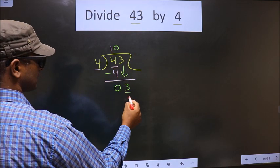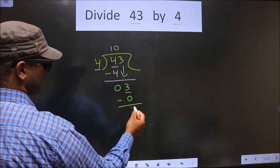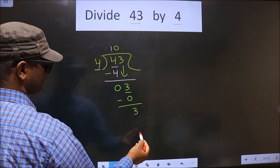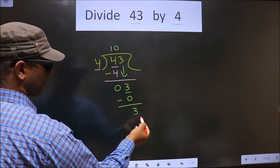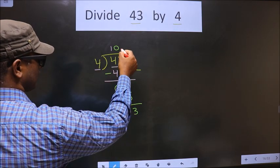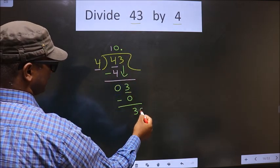So 4 into 0 is 0. Now you subtract. Now you get 3. Here we did not take any number down. Now 3 is smaller than 4. So now you put a dot and take 0.